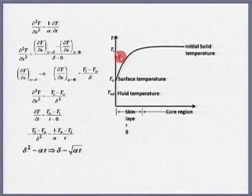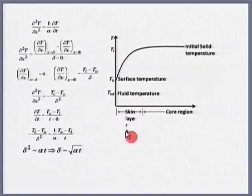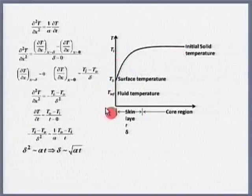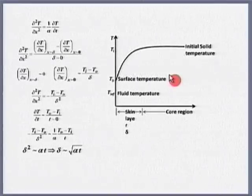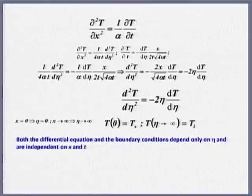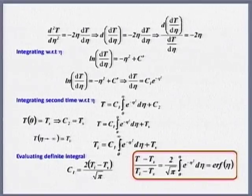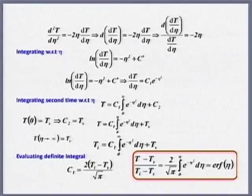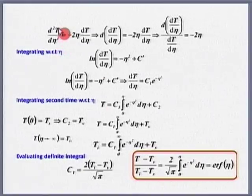This comes from order-of-magnitude analysis — δ is of the order of √(αt). Only within this layer delta are we taking the medium; we are treating it as a semi-infinite medium. Very far away, the egg's yolk does not know it has been taken out from the cooker to the atmosphere.